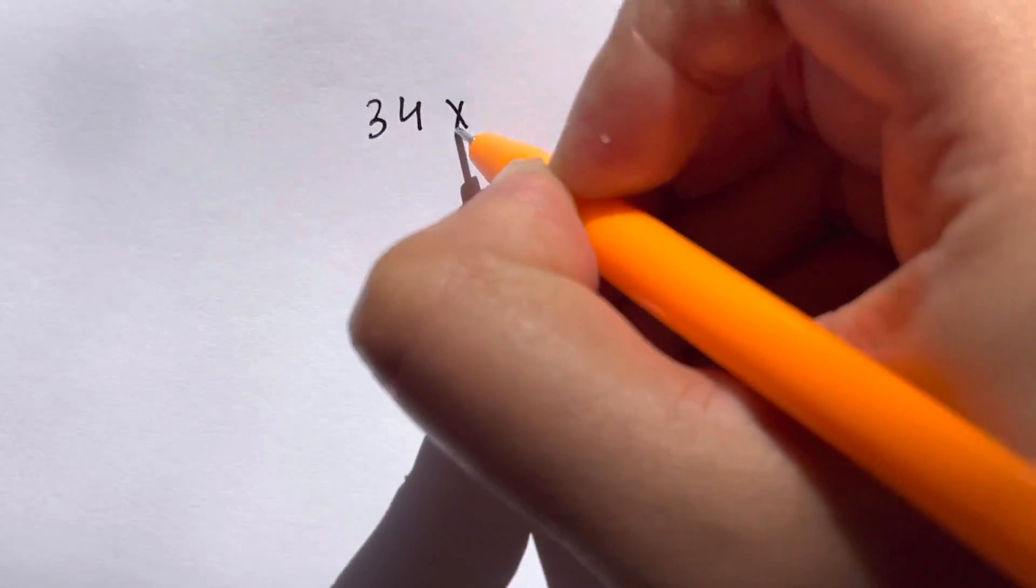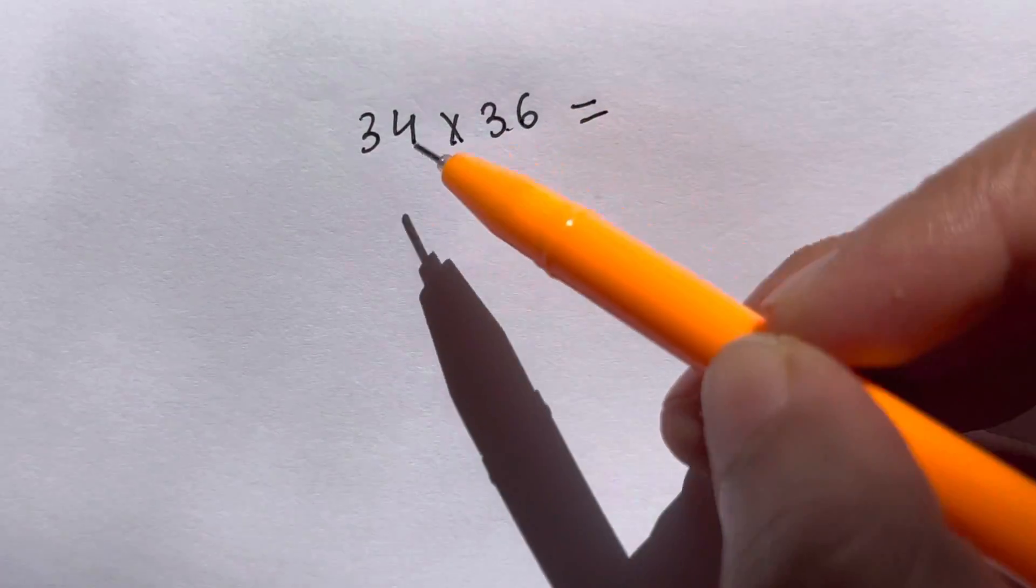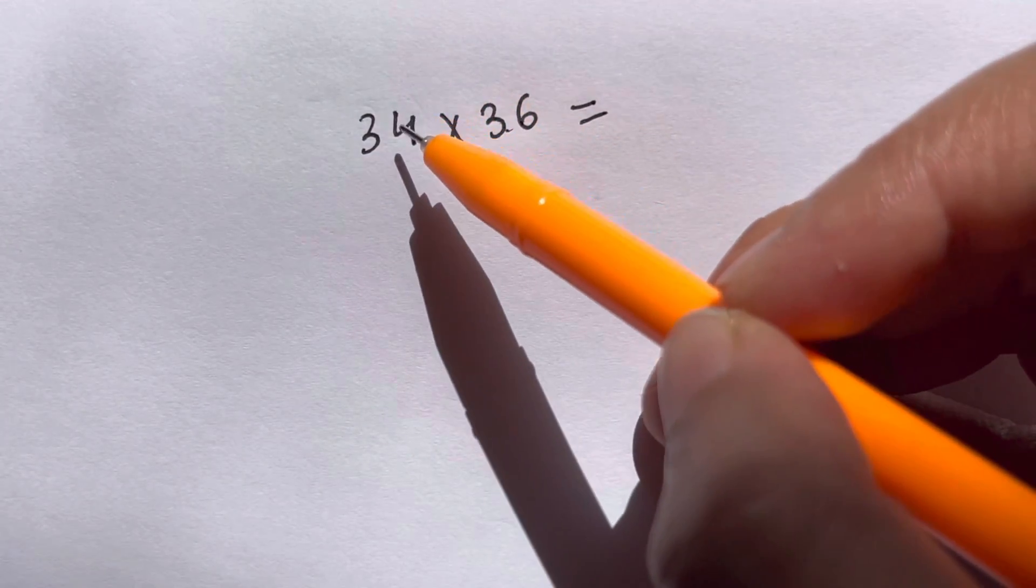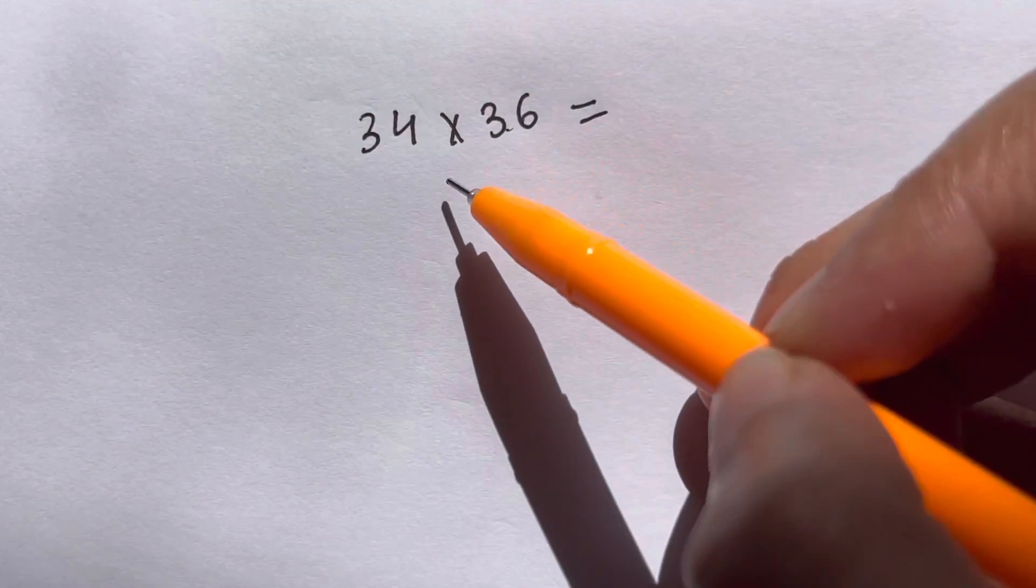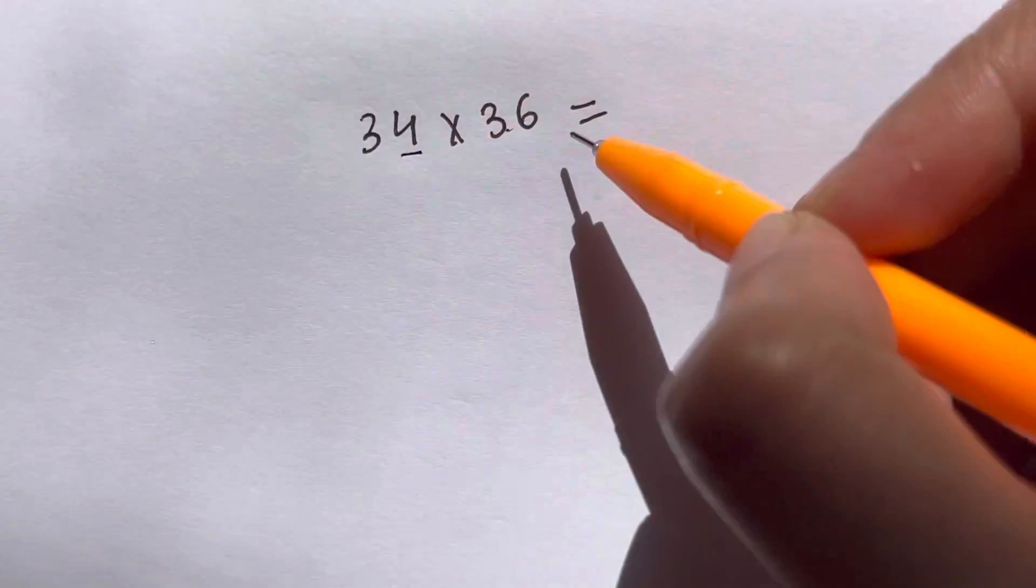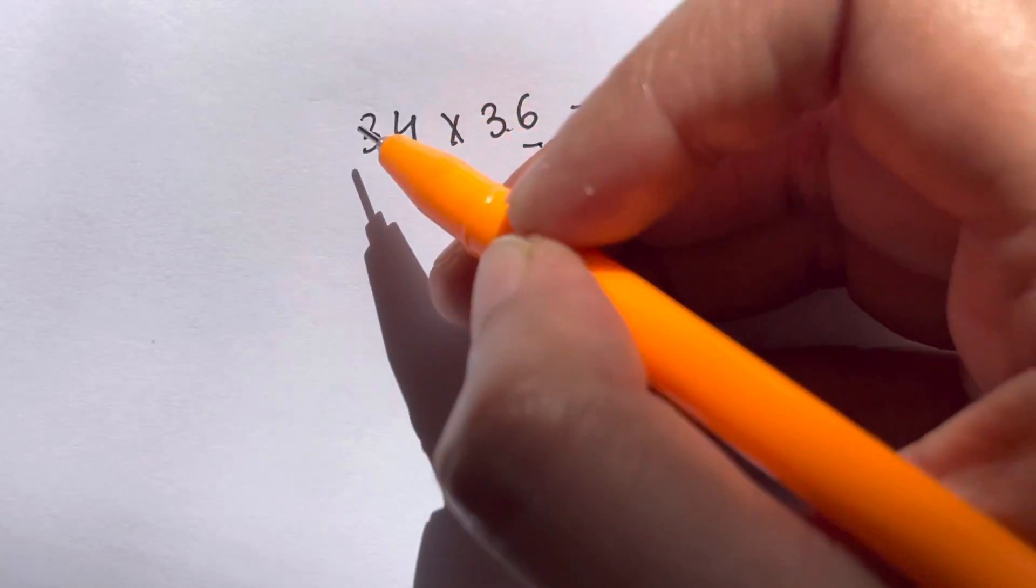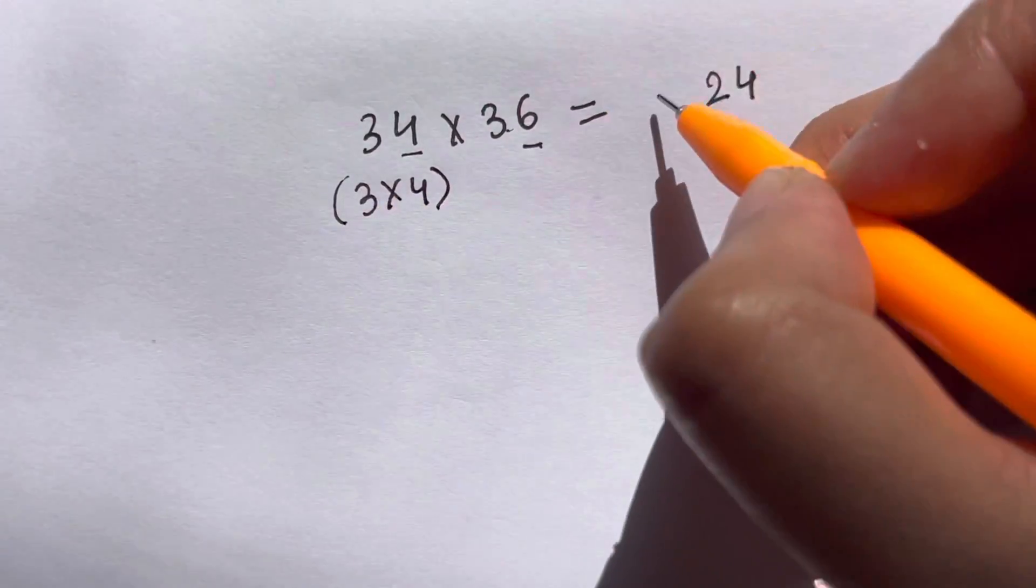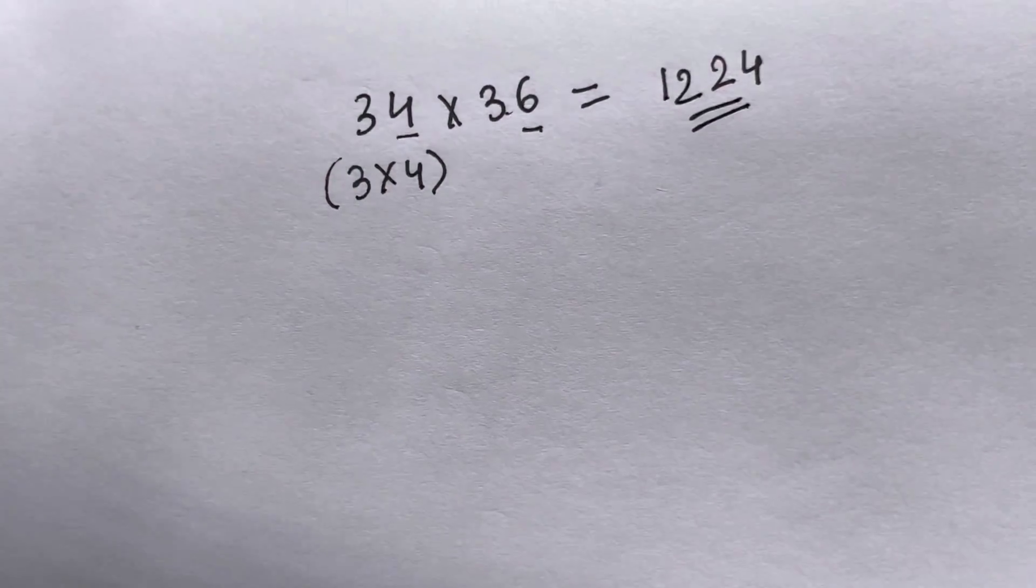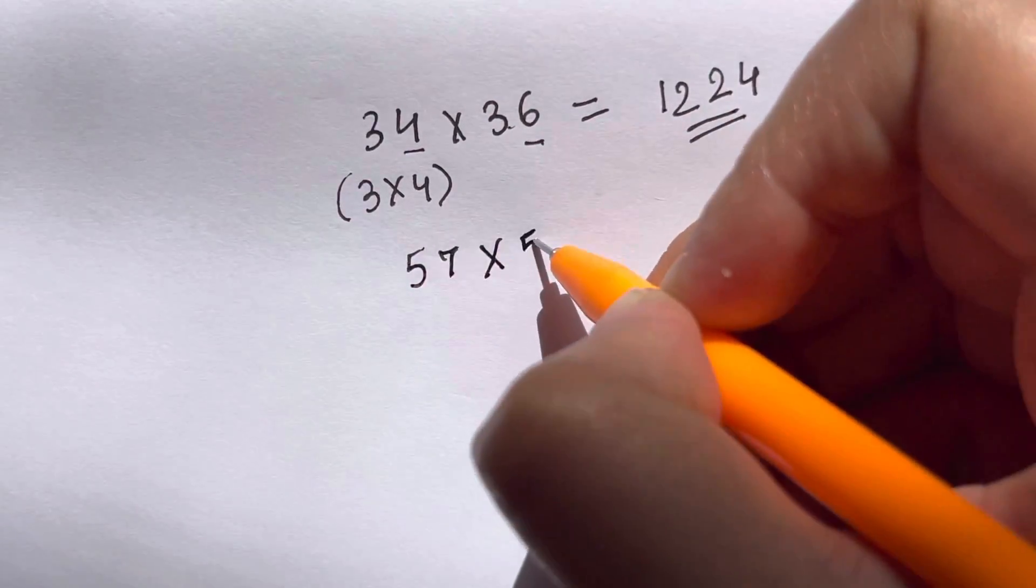For example, 34 times 36. Here the starting digit is same—the tens digit is same—and the ending digit adds up to 10: 6 plus 4 gives you 10. Then this trick applies. You multiply 4 and 6 and write down 24. What's the next consecutive number after 3? That's 4, so you multiply 3 times 4, which is 12. Your answer is 1224. Amazing, guys!